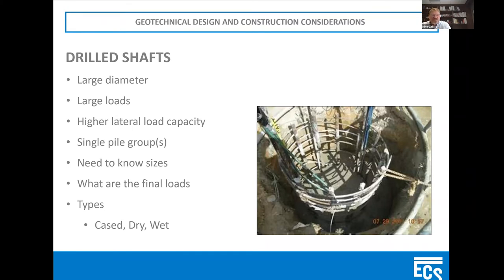We moved to drilled shafts — very large diameter foundations drilled 30, 40, even 60 feet into the ground. They can handle extremely high loads because they're 36 to 60 inches in diameter. A single drilled shaft can carry so much weight and handle very little deflection because of its size. This was the preferred method for the ride section within the events building, though we still didn't know the final loads at this point.